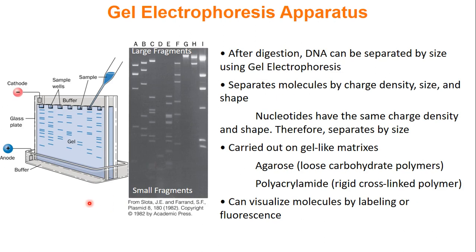After you have digested or cut up your DNA, you can separate it by size using gel electrophoresis. A gel is made out of agarose or polyacrylamide between two glass plates with a buffer. Samples are loaded onto the top of the gel, which is connected to electricity — positive on the bottom, negative on the top. DNA is negatively charged, so when electricity is turned on, the negative DNA is attracted towards the anode.